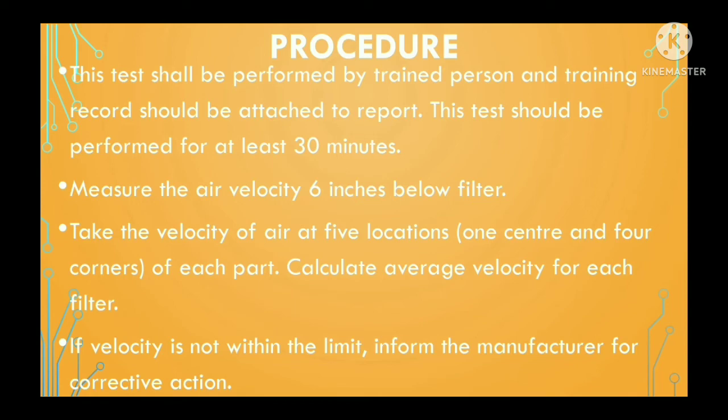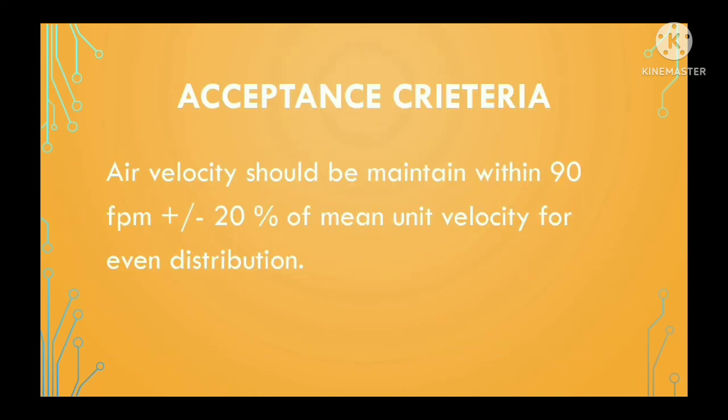Step three: take the velocity of air at five locations of each area and calculate the average velocity for each filter, in case you are calculating air velocity for more than one filter. Step four: if velocity is not within the limit, inform the manufacturer for corrective actions.